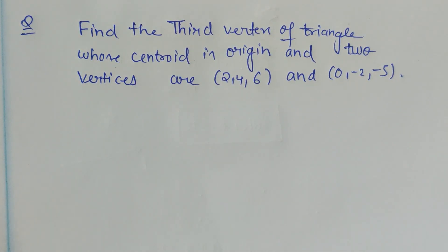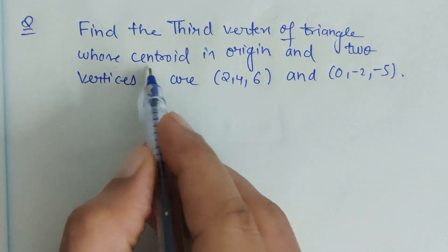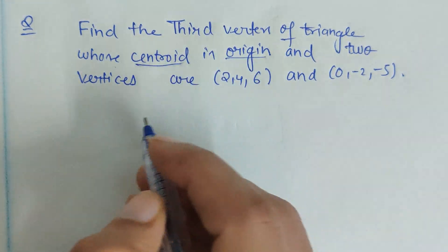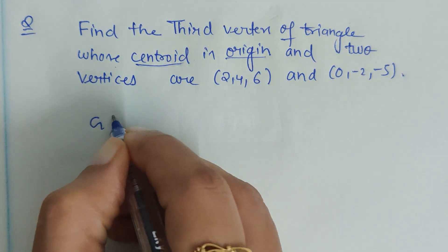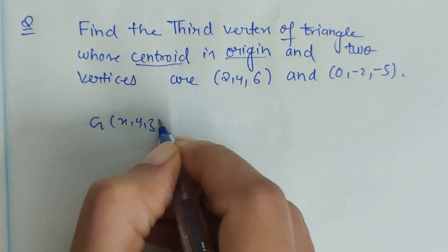Here we have to find the third vertex of the triangle. As we know, there are three vertices and we are given the centroid is origin. So obviously the centroid formula will be used. So centroid, let us say x, y, z.